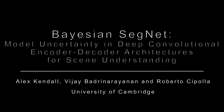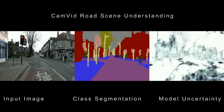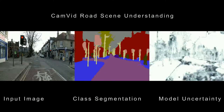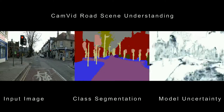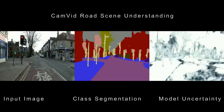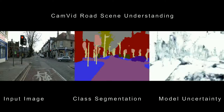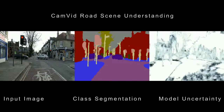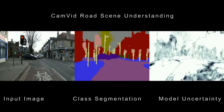We present Bayesian Segnet, a deep convolutional encoder-decoder architecture for scene understanding. Our system can produce a probabilistic segmentation of colour images in near real time.